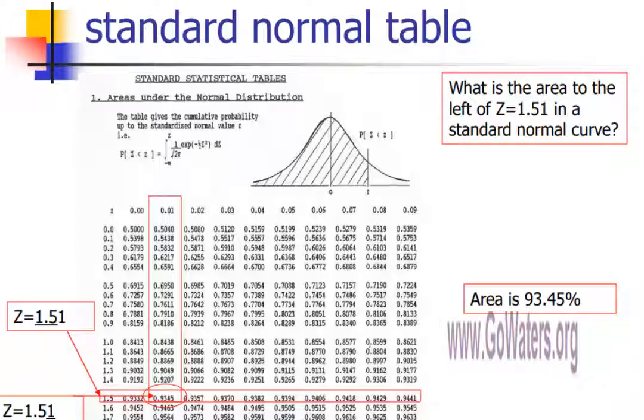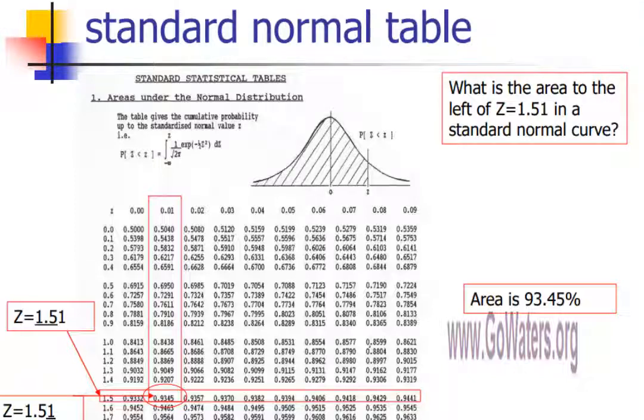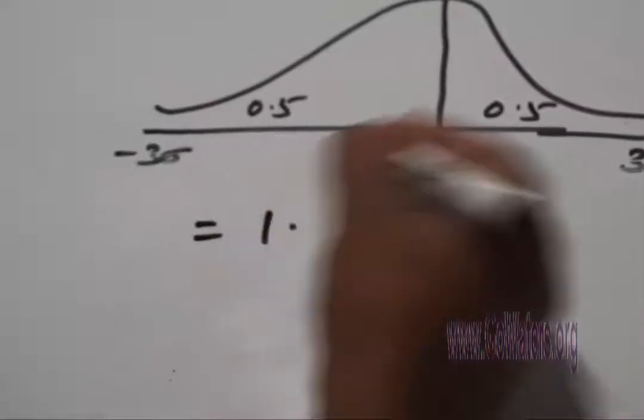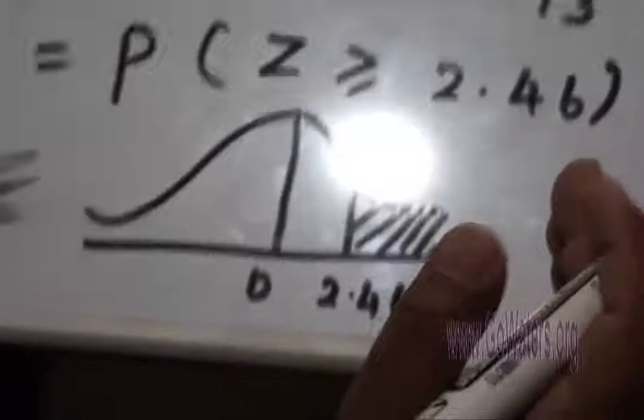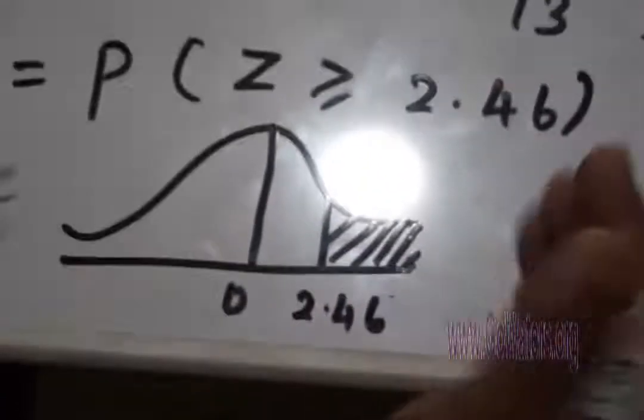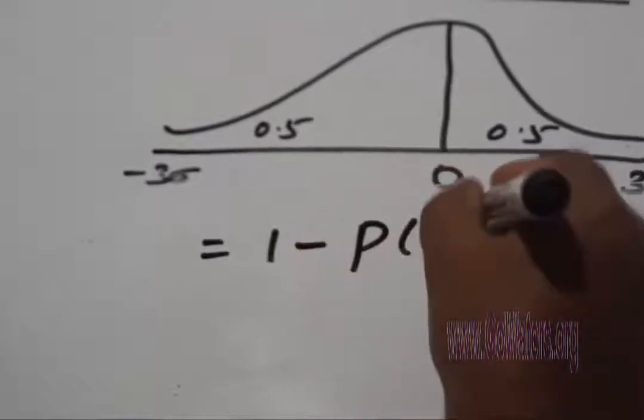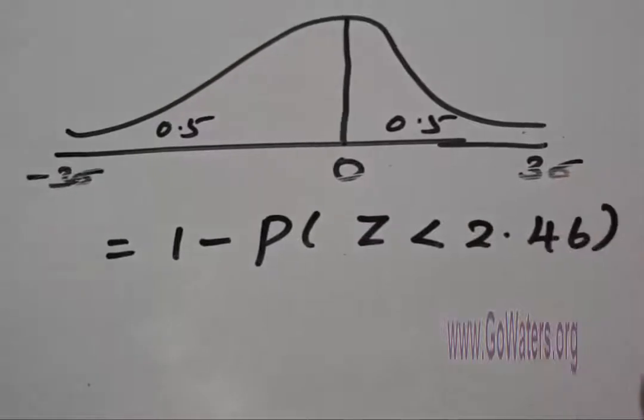You know that the total area under the curve is 1. But the area I need is Z greater than or equal to 2.46. So how am I going to read that value from the table? 1 minus probability of Z less than 2.46.